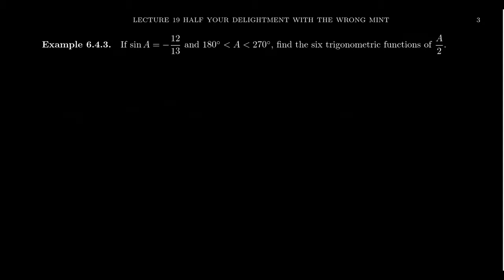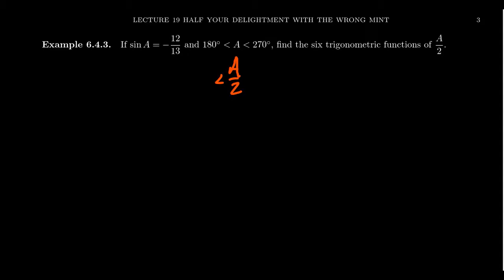Let's do another example. This time, sine of a equals negative 12/13, and a is between 180 degrees and 270 degrees — so a is in the third quadrant. With half-angles, we need more than just the quadrant. Since a is between 180 and 270, a/2 is between 90 and 135, placing a/2 in the second quadrant. To use the half-angle identities for sine and cosine of a/2, we first need to know cosine of a.